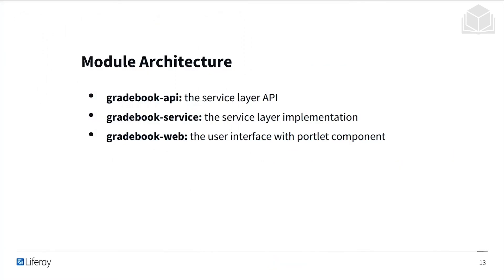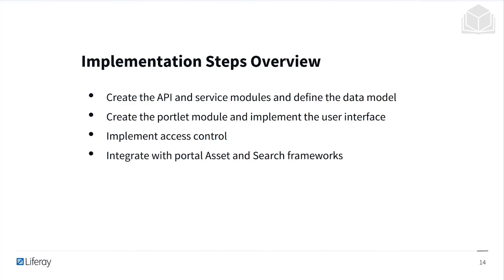In this module, we'll have the following architecture: an API module for the service layer API, a service module for the service layer implementation, and a web module for the user interface with the portlet component. We'll roughly take the following steps: first create the API and service modules and define the data model, then create the portlet module and implement the user interface, implement access control, and finally integrate with the portal, asset, and search frameworks.